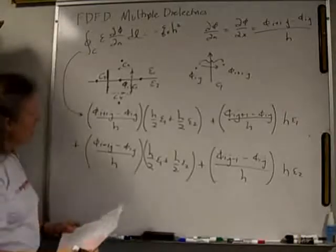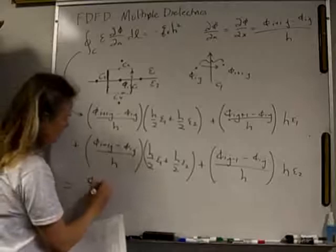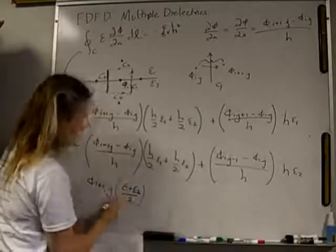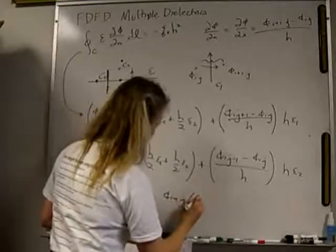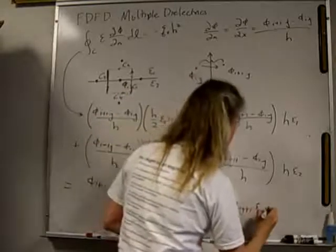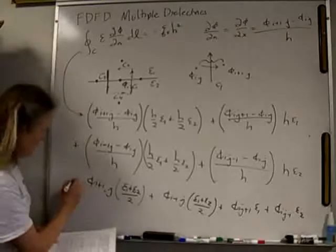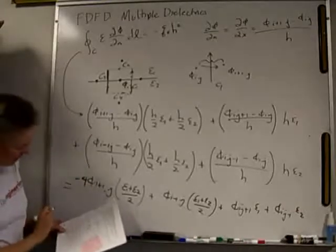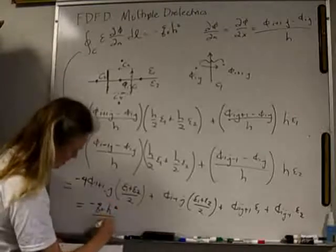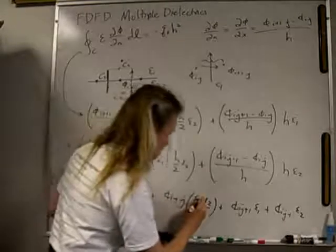Now if I rearrange this and combine all of my terms, just doing the basic math on this, what I'm going to end up with is phi of I plus 1J times epsilon 1 plus epsilon 2 over 2 plus phi of I minus 1J times epsilon 1 plus epsilon 2 over 2 plus phi of IJ plus 1 times epsilon 1 plus phi of IJ minus 1 times epsilon 2. And there's going to be a minus 4 right here in the front of this thing. And on the other side, that's going to be equal to minus QV H squared over 2 epsilon 0. And these are R values, Epsilon R1, Epsilon R2, so on and so forth.